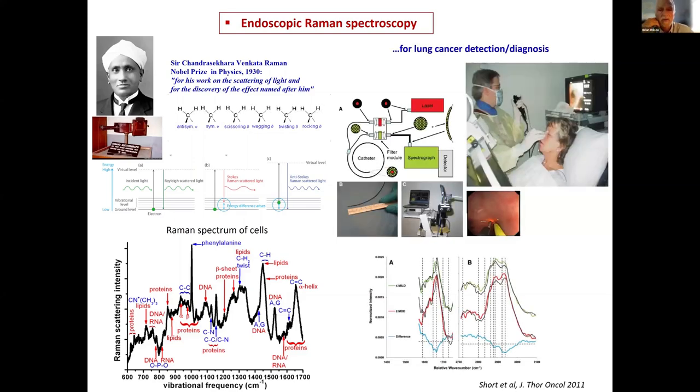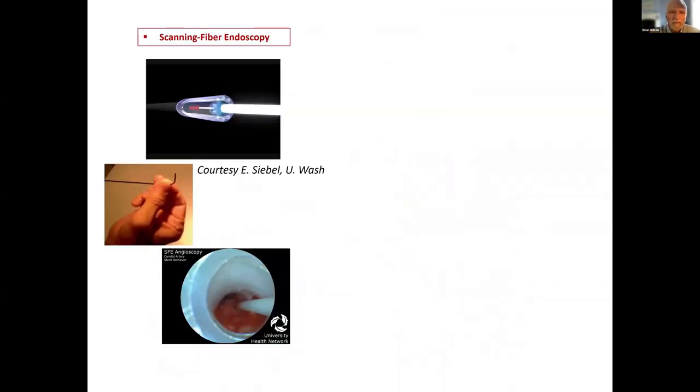That type of technique can now be done endoscopically. This is an example using a standard endoscope but extending the capability by having an optical fiber-based system. The optical fiber can be placed through the channel of the endoscope and touched onto the tissue, where you can non-invasively get these complex spectra. It's been shown in a number of different organs—lung, esophagus, colon, bladder—that you can distinguish normal from abnormal, in particular for very early cancer.